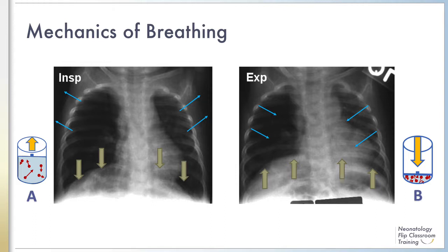Focus now on the left-sided figure. Upon inspiration, the diaphragm contracts, becoming flattened and the respiratory muscles attempt to expand the chest wall. This correlates to container A in the Boyle's Law example. As the volume of the pleural space increases, the pressure in the thoracic cavity decreases, creating a negative pressure differential. As a result, air is drawn into the lungs from the atmosphere. This is the active phase of the respiratory cycle.